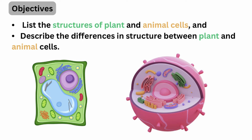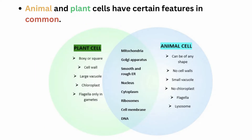Section 1 is to list the structures of plant and animal cells, and to describe the differences in structure between plant and animal cells. Animal and plant cells have certain features in common.